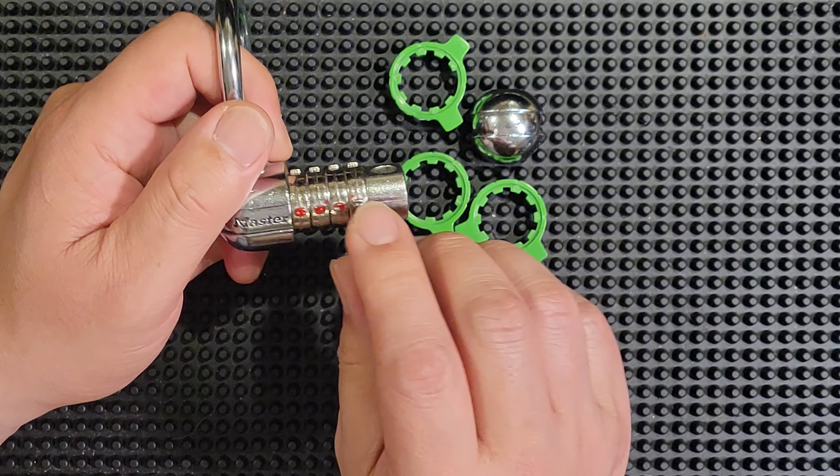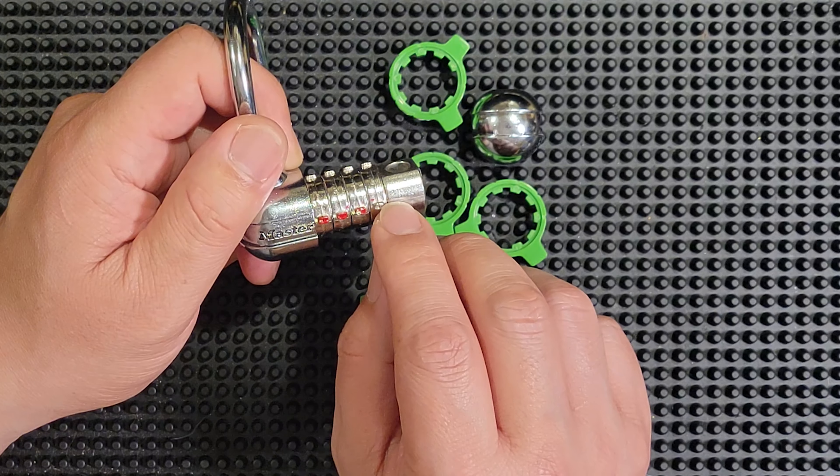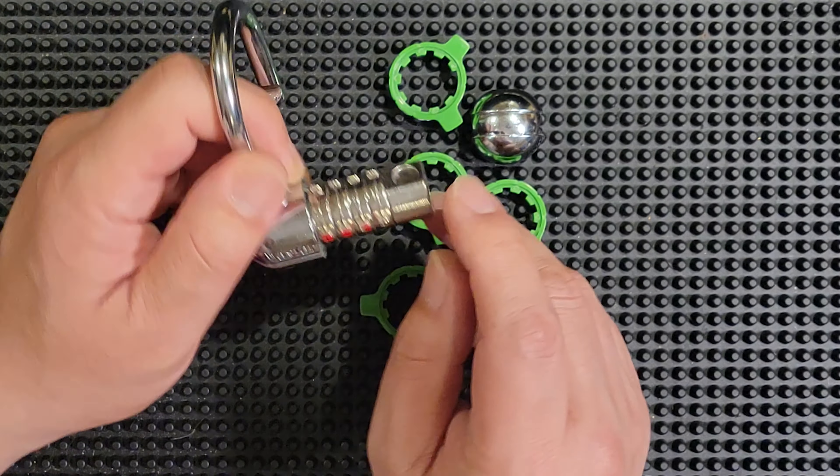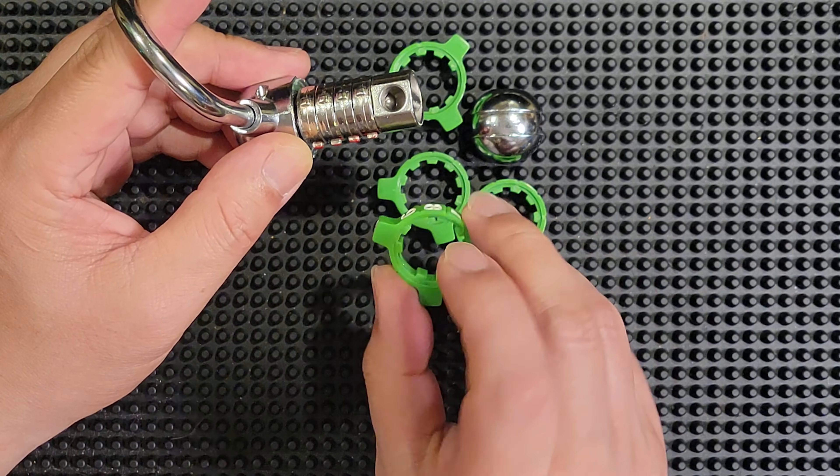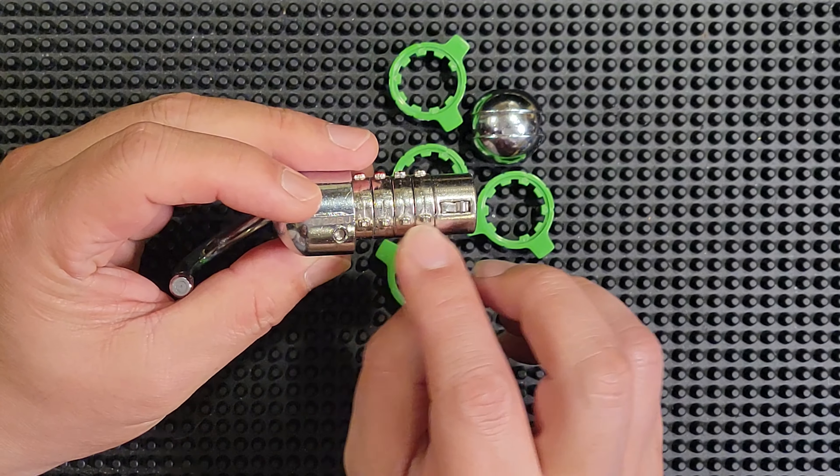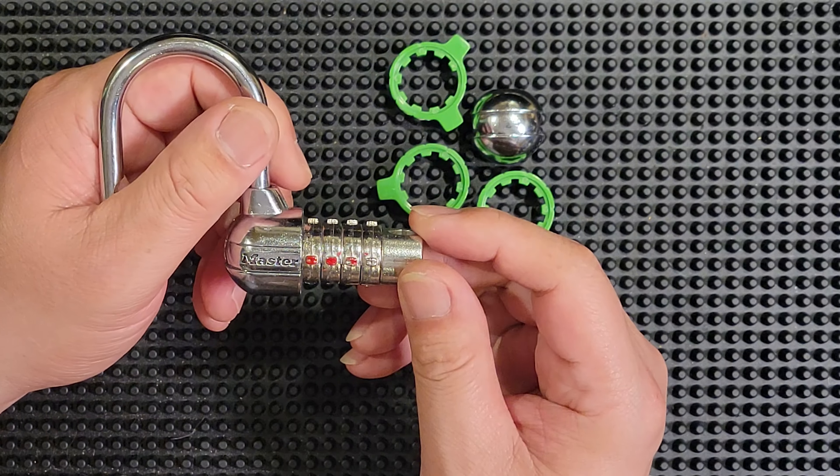But that doesn't matter because the ones that indicate the unlocked position all have a groove in the top of the nub. And the other nubs that interact with the number wheel, they do not have that groove. They're flat on the top.